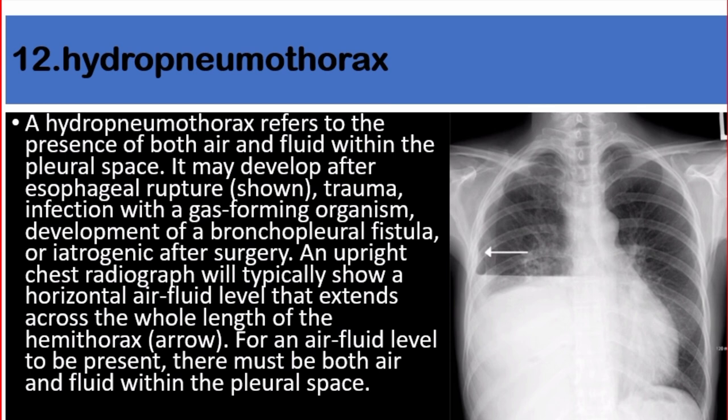Number twelve: hydropneumothorax. Hydropneumothorax refers to the presence of both air and fluid within the pleural space. It may develop after esophageal rupture, trauma, infection with a gas-forming organism, development of a bronchopleural fistula, or iatrogenically after surgery. An upright chest radiograph will typically show a horizontal air-fluid level that extends across the whole length of the hemithorax. For an air-fluid level to be present, there must be both air and fluid within the pleural space.